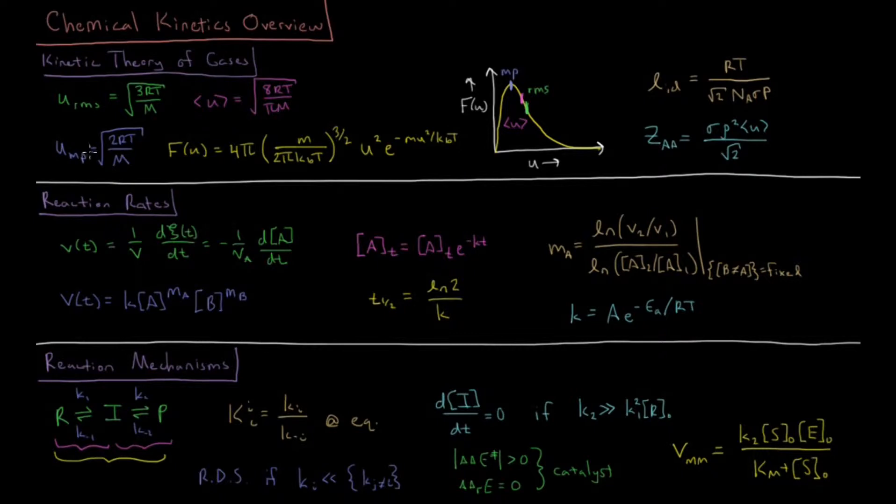And then there's also a most probable speed which is slightly lower than either of these two speeds which is square root of 2RT over M.